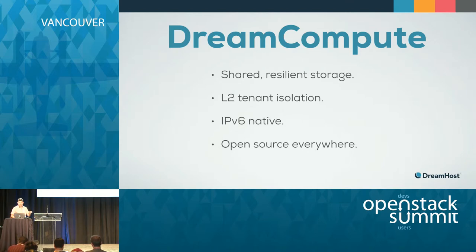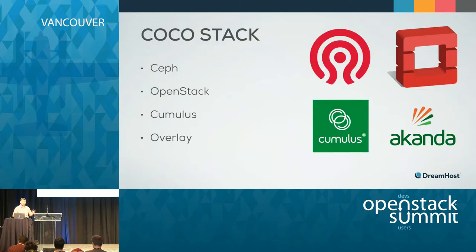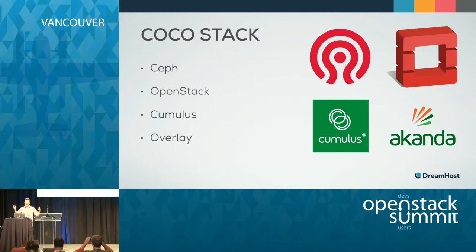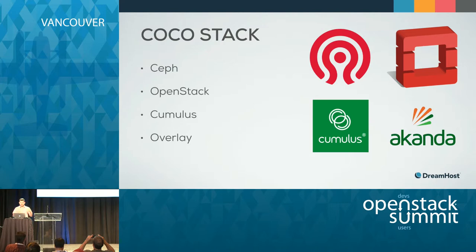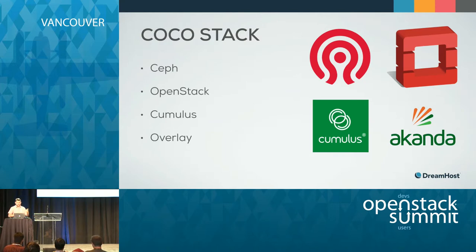And what do we end up with? The Cocoa stack — Ceph, OpenStack, Cumulus, and Overlay. That's what it all stands for. While the 90s and 2000s were the era of building up on the LAMP stack, now we're building on the Cocoa stack. This is a result of three-plus years of building a cloud on OpenStack. We tested a lot of different things — this is what worked for us and we believe would work for a lot of other people. These four components have helped us realize all of those fundamental design principles that we set out to achieve.